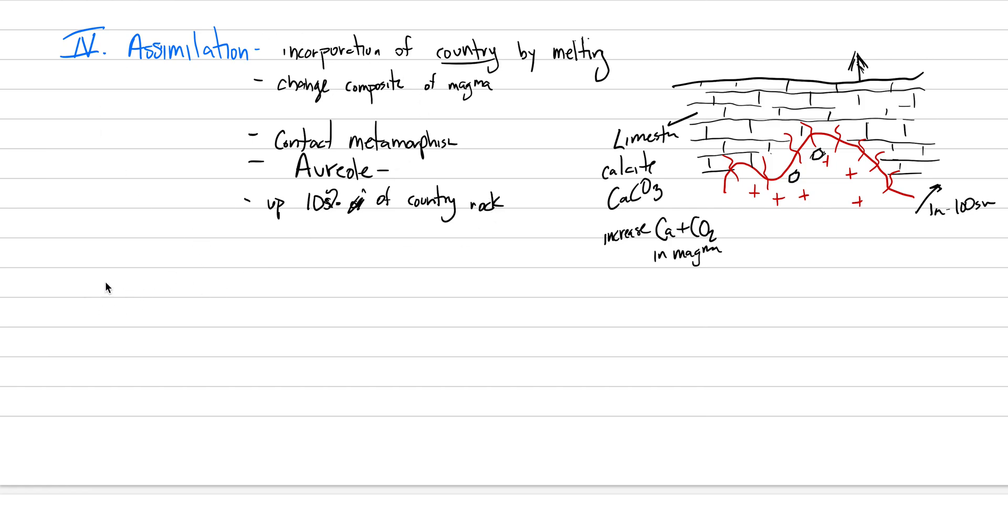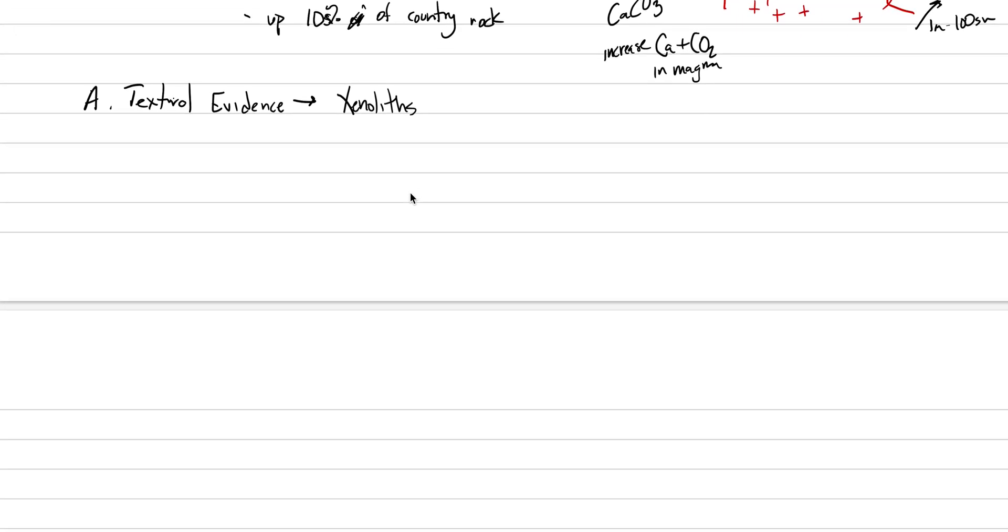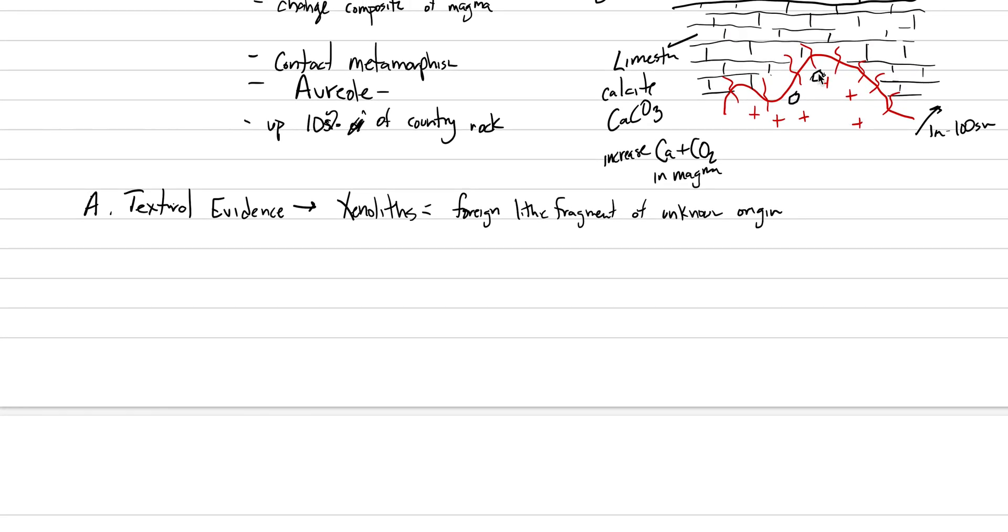Let's look at the different evidences to support how important assimilation is. There is textural evidence in the form of xenoliths. Sometimes we'll see contact margins, but xenoliths are our primary evidence. A xenolith is a foreign lithic fragment stuck in a magma. Your definition: a foreign lithic fragment of unknown origin. It's just a chunk of country rock floating in a magma.